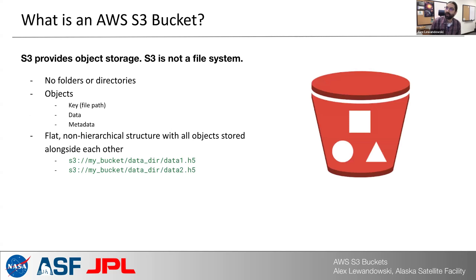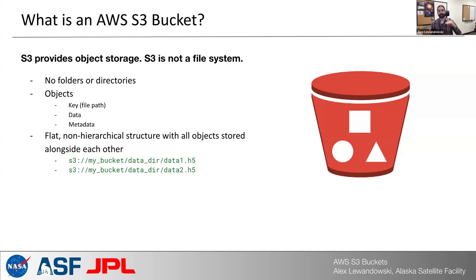AWS S3 Buckets are AWS's solution for object storage in the cloud. An important distinction to make here is that S3 is not a file system. It doesn't have a hierarchical structure of organizing files into directories and subdirectories — everything is stored in a flat structure side by side.